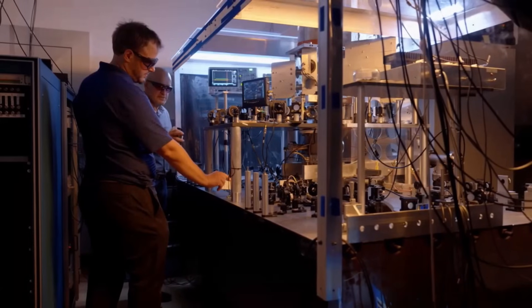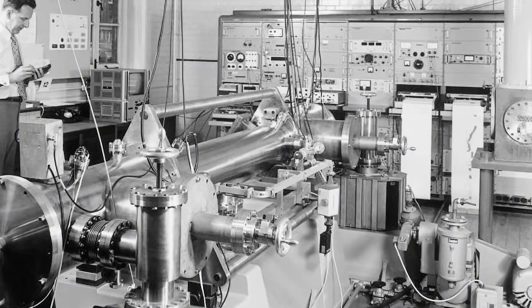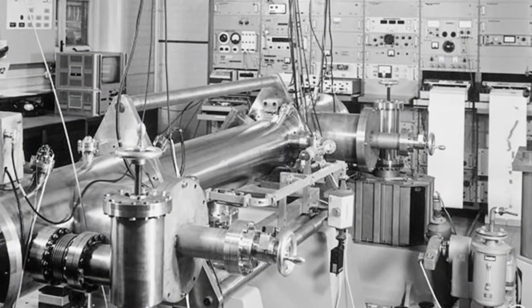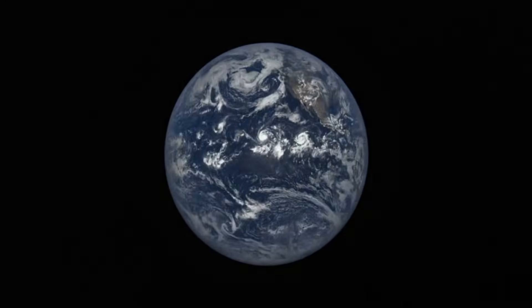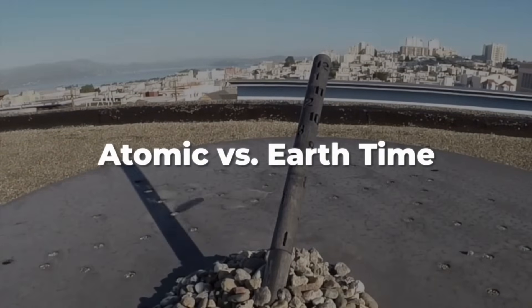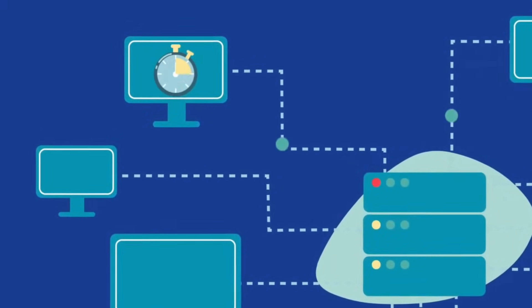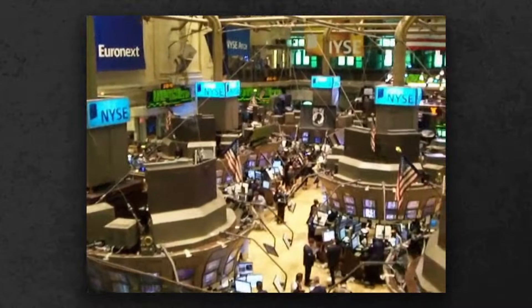Atomic clocks define a second with extraordinary precision: 9,192,631,770 vibrations of a cesium-133 atom counted out since 1967. But the Earth itself refuses to keep pace. Our planet's rotation drifts and wobbles, sometimes running a little slow, sometimes a little fast. To keep civil time in sync with the Sun, leap seconds were introduced in 1972. Every so often, the world's clocks pause for a single silent second, letting the planet catch up. But each leap second throws a wrench into digital systems: telecommunications, GPS, stock exchanges. All depend on time that never skips a beat.